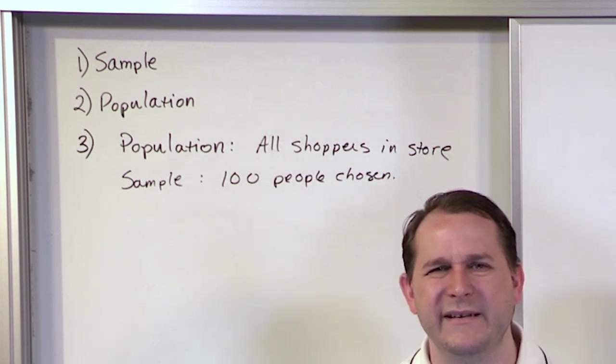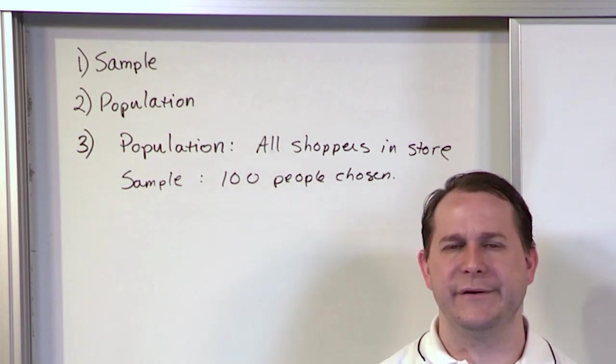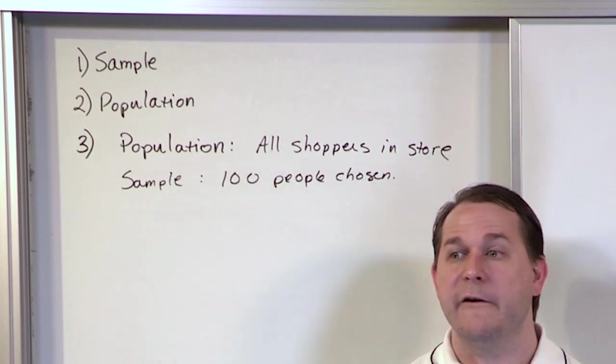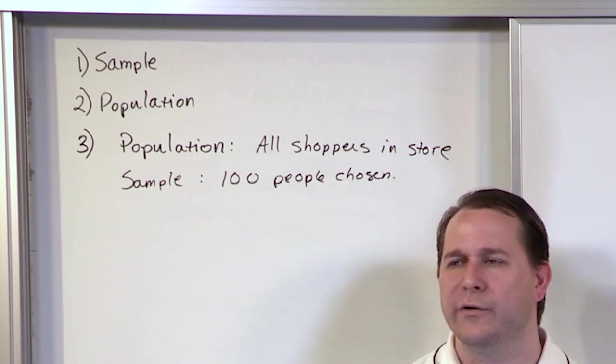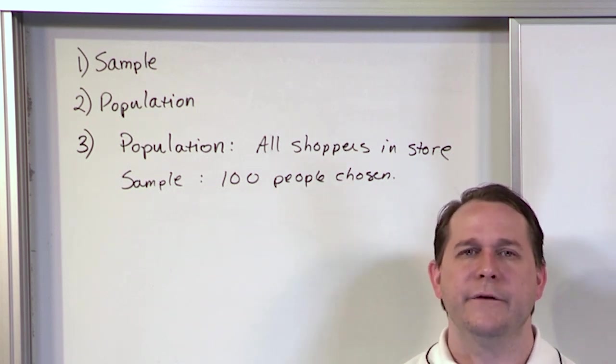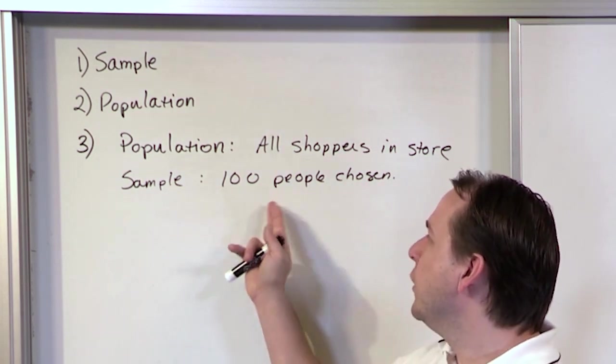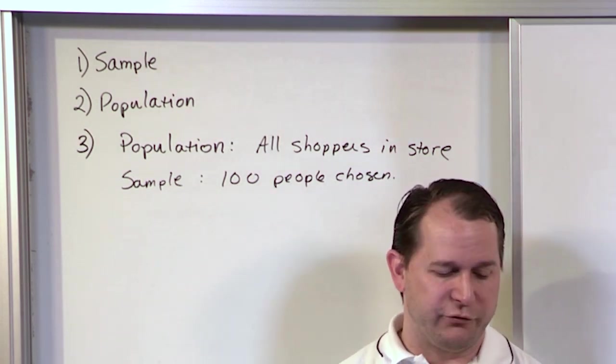That would be your population. And from that, you look at 100 people. A typical store, a busy department store might have thousands or even tens of thousands at Christmas time of people coming through that store every day. It's kind of hard to ask all those people what's your household income. So you take a smaller sample from that 100 people and then you go from there and draw your conclusions.